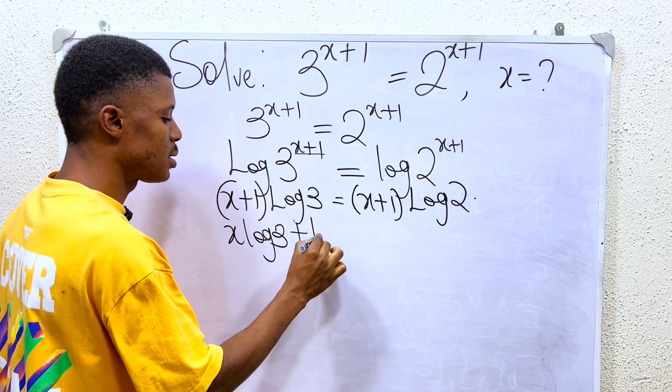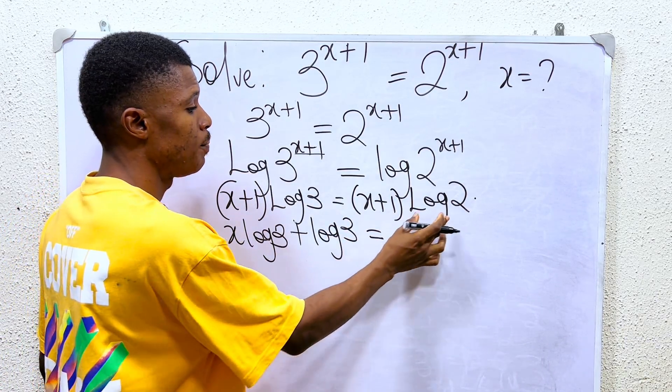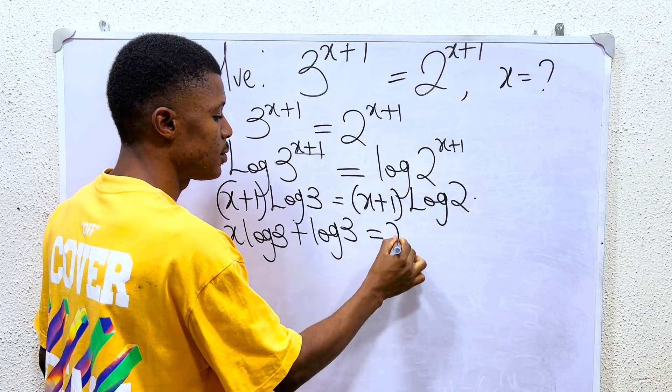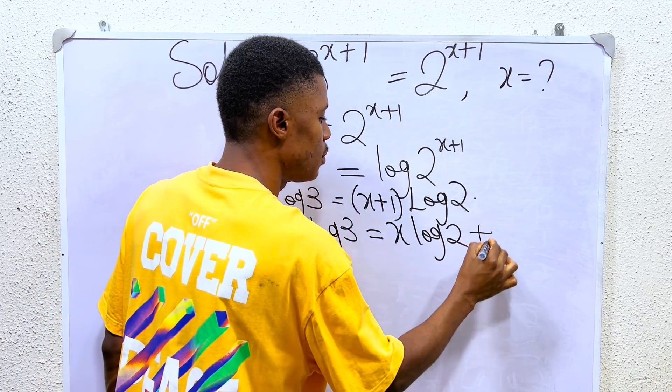Log 3 times 1 will give you plus log 3, and that equals—we do the same thing here—log 2 times x is gonna give you x log 2, and log 2 times 1 is gonna give you plus log 2.